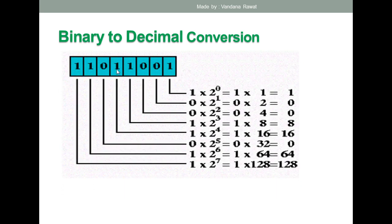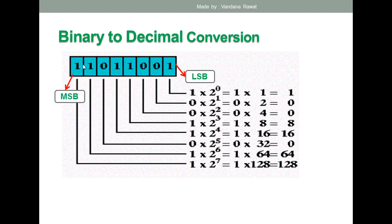Take this binary number: 1 1 0 1 1 0 0 1. One point to be noted is that we always start multiplication from the LSB digit — the least significant bit — which is the rightmost digit. The most significant bit is the leftmost bit.